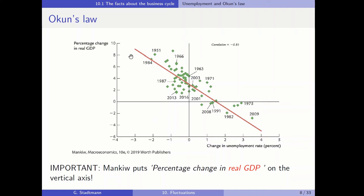In case the growth rate of real GDP is pretty low, the change in the unemployment rate is positive and the unemployment rate will increase. One important detail: Mankiw puts the percentage change in real GDP on the vertical axis, whereas in our lecture until now we had the change in the unemployment rate on the vertical axis.